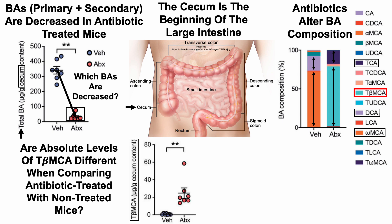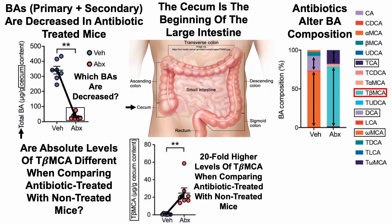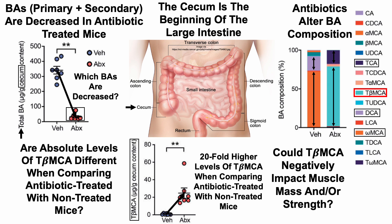Looking at levels of tauro-beta-muricholic acid in the cecum, we can see that tauro-beta-MCA is significantly higher — in fact, almost 20-fold higher in the antibiotic-treated mice when compared with the non-treated mice. This then raises the question: could tauro-beta-muricholic acid negatively impact muscle mass and/or strength?